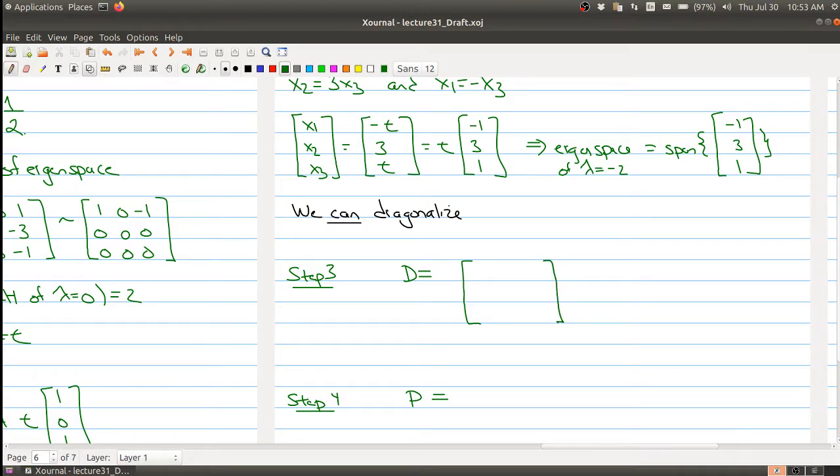We want to make a square matrix, but we only have two eigenvalues. But if we count things correctly with the correct multiplicity, then we can actually make a matrix of the right size, because our eigenvalue 0 appears twice.